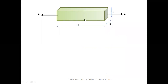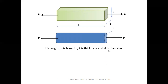Now let us take a member, or a bar, or a structural member having dimensions: length, breadth, and thickness. In some books, instead of T for thickness they mention D for depth. This member is subjected to an axial tensile load P. Axial tensile load means the line of action of the load passes through the center of the bar. It can have a rectangular or square section. For a cylindrical rod having diameter D, also subjected to an axial tensile load, L is the length, B is the breadth, T is the thickness, and D is the diameter.